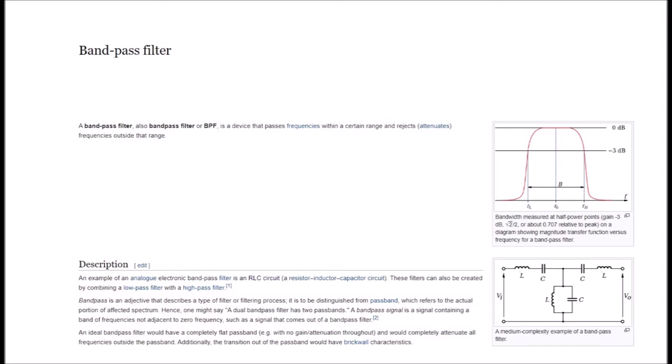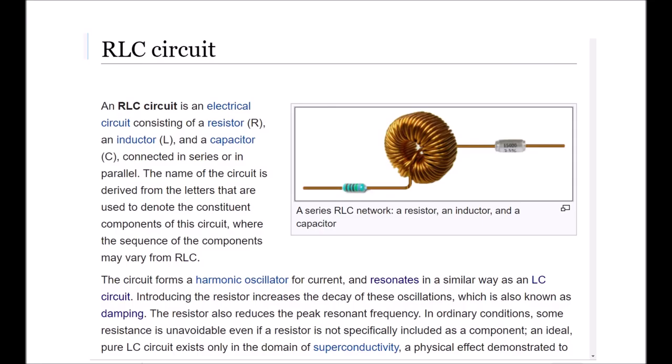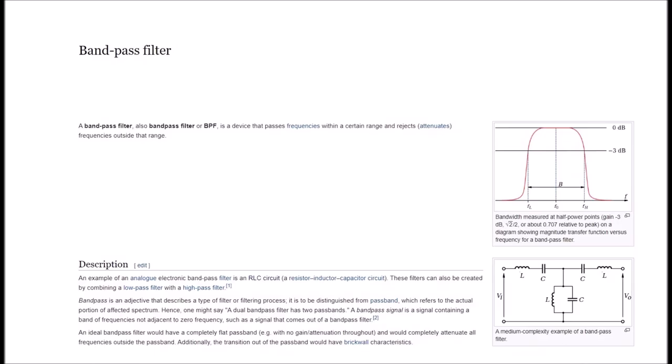Description. An example of an analog electronic band pass filter is an RLC circuit, a resistor-inductor-capacitor circuit. These filters can also be created by combining a low-pass filter with a high-pass filter. Band pass filter is an adjective that describes a type of filter or filtering process. It is to be distinguished from pass-band, which refers to the actual portion of affected spectrum. Hence, one might say a dual band pass filter has two pass-bands. A band pass signal is a signal containing a band of frequencies not adjacent to zero frequency, such as a signal that comes out of a band pass filter.